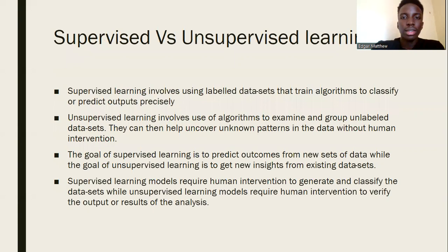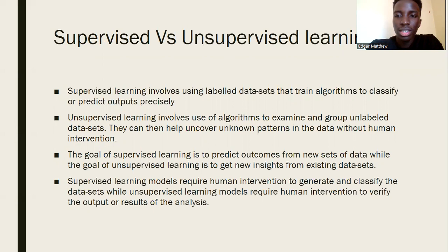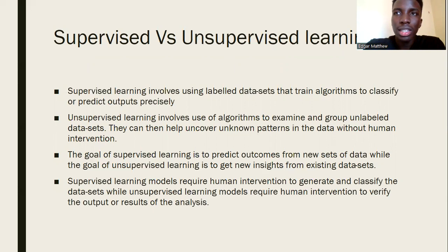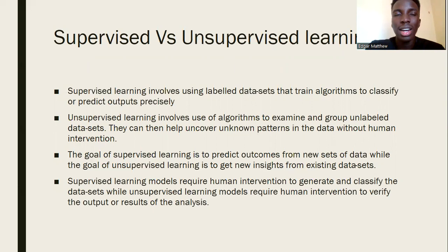Supervised learning involves using labelled data sets that train algorithms to classify or predict outputs precisely. Human beings get a data set, classify and label it, then give it to the algorithm, which trains using that labelled data set. Once the algorithm has been trained, it can use what it has learned to make predictions or forecasts on new sets of data.